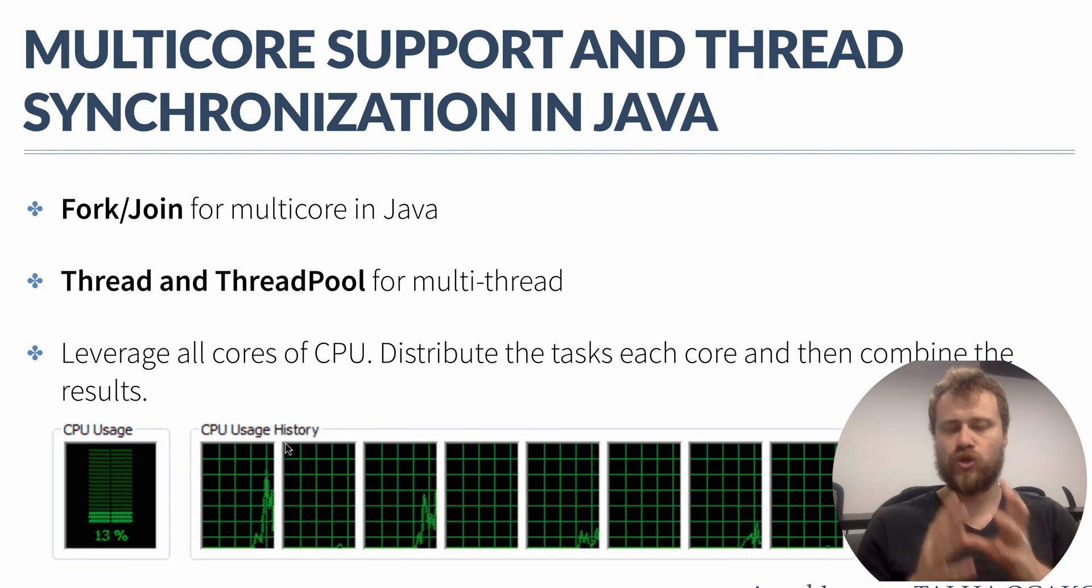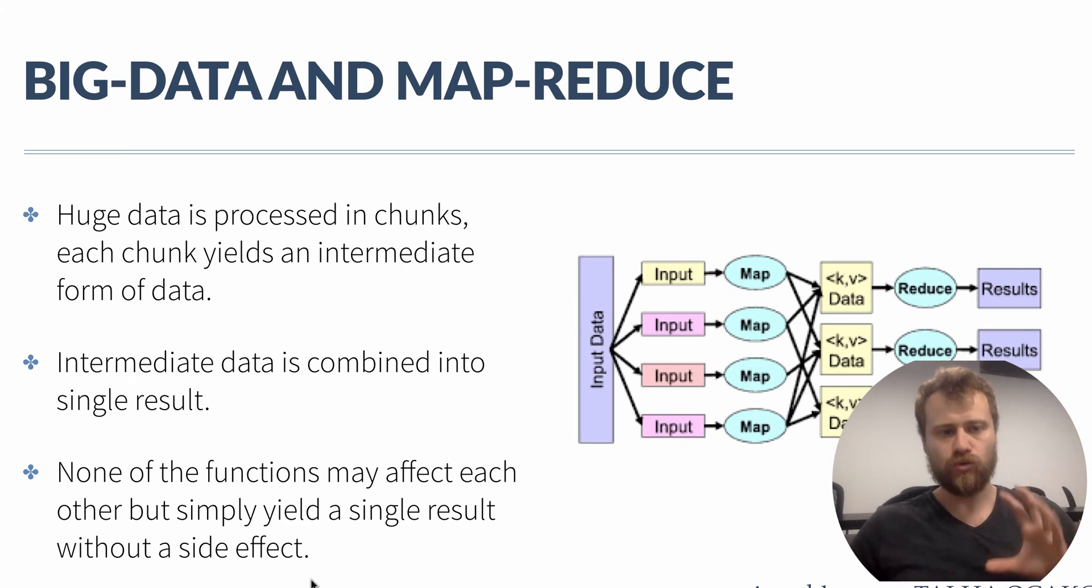We may shorten the time for processing this data. Let's say if a task lasts for 20 seconds, it may drop to four seconds with five or six cores. That's why we are leveraging multi-core applications.